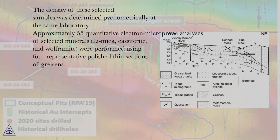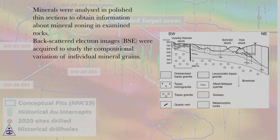Approximately 55 quantitative electron microprobe analyses of selected minerals (Li-mica, cassiterite, and wolframite) were performed using four representative polished thin sections of greisens. Minerals were analyzed in polished thin sections to obtain information about mineral zoning in examined rocks. Back-scattered electron images (BSE) were acquired to study the compositional variation of individual mineral grains.